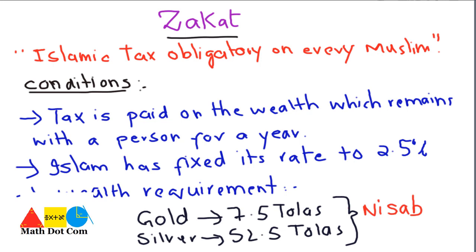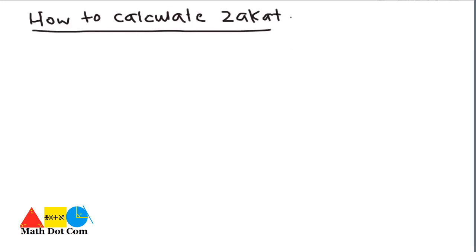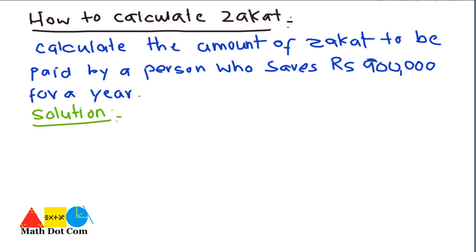Let's see how you can find the zakat. We have a problem to discuss in order to check how you can calculate zakat on a certain wealth. We have to calculate the amount of zakat to be paid by a person who saved rupees 9 lakh for a year. This amount is more than the equivalent of 7.5 tolas, so we are going to calculate the zakat applicable on it.